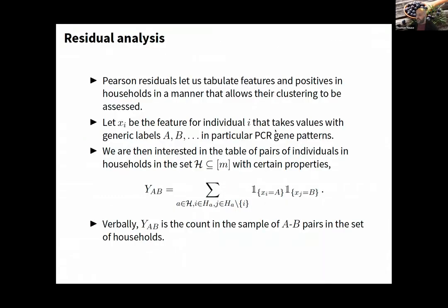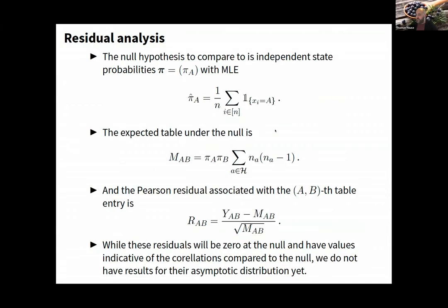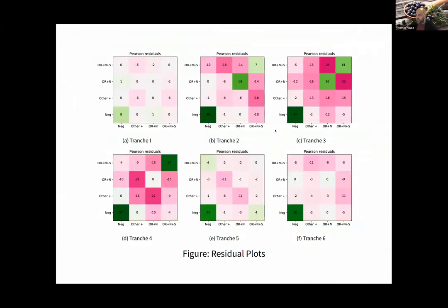We did residual analysis; residuals let us tabulate features of positives in households to see how they cluster. This was looking at clustering of Alpha and Delta. A way to interpret this: these green squares have positive residual. The gene patterns—whether you're S-positive or negative, indicative of Alpha or Delta—